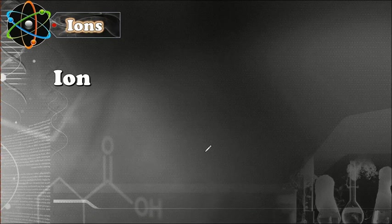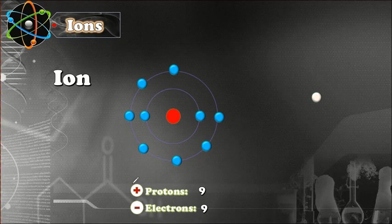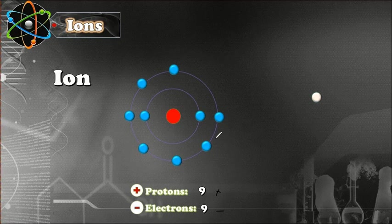Here we have an atom of fluorine. It has nine protons and nine electrons — nine positive charges and nine negative charges. The charges balance each other, so the charge of this atom is neutral. It does not have a charge because it has the same number of protons and electrons.